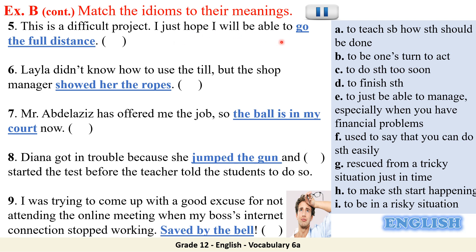'To go the full distance' is an idiom and means to finish something, to finish a project for example. If you're showing somebody the ropes, what are you doing? You're teaching them how something should be done.